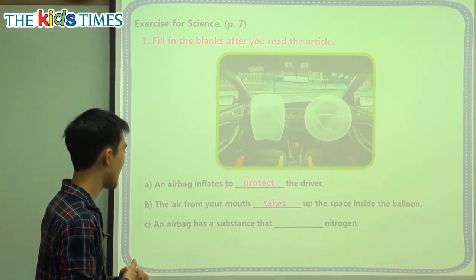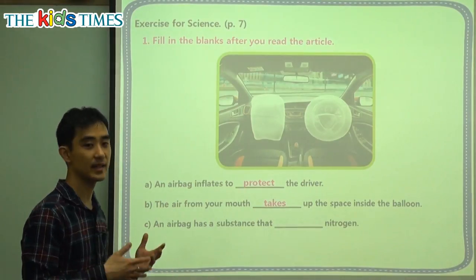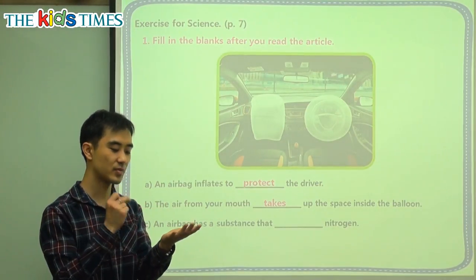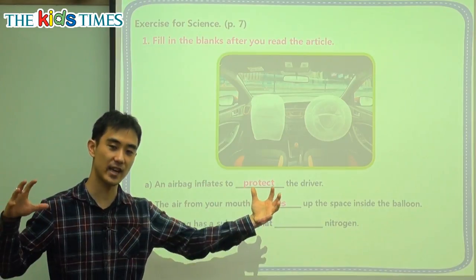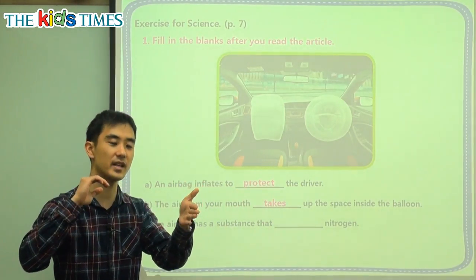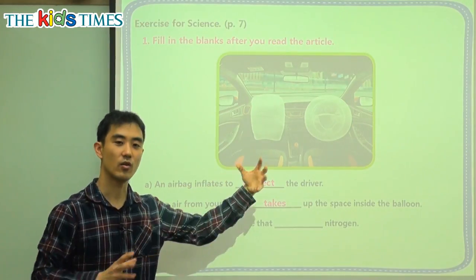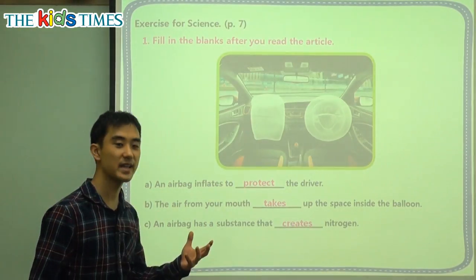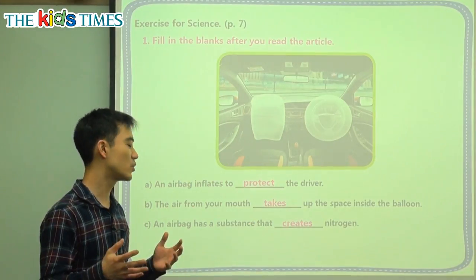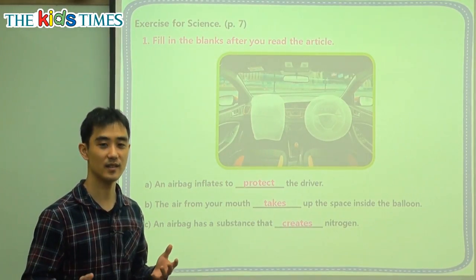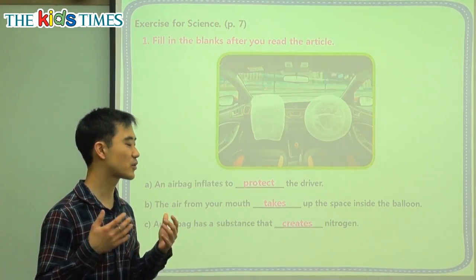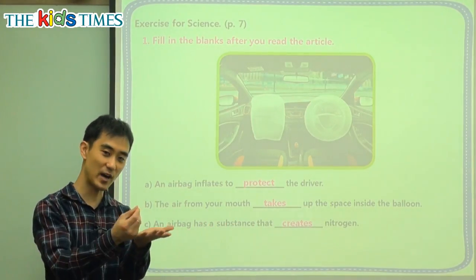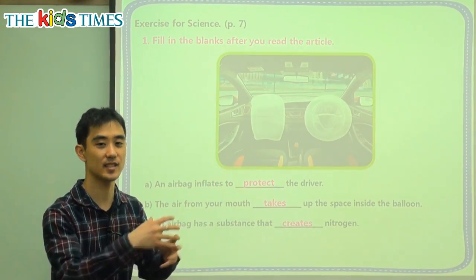C: An airbag has a substance that blank nitrogen. When there's a spark, or when sensors detect an accident, this substance will change and start to make nitrogen. To make, we say to create. So who created Hangul? King Sejong. Who created you? Your mother and father created you, they made you. This substance — this powder — makes nitrogen gas very quickly.